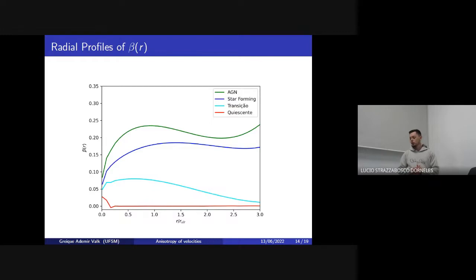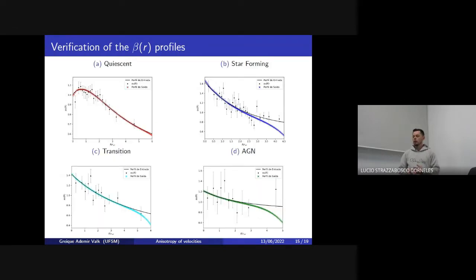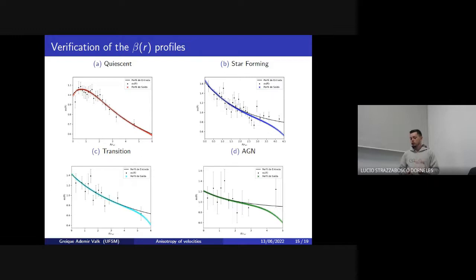Analyzing this image, we can see that the AGN, star-forming, and transition populations have more positive values of beta. This indicates that these three populations have more radial orbits than the quiescent population. Using this profile, we can invert the Jeans equations to obtain the projected velocity dispersion profile for each population. This profile gives us information about how accurate the beta profile is, and we can see that for some populations the beta profile is more precise than for others.